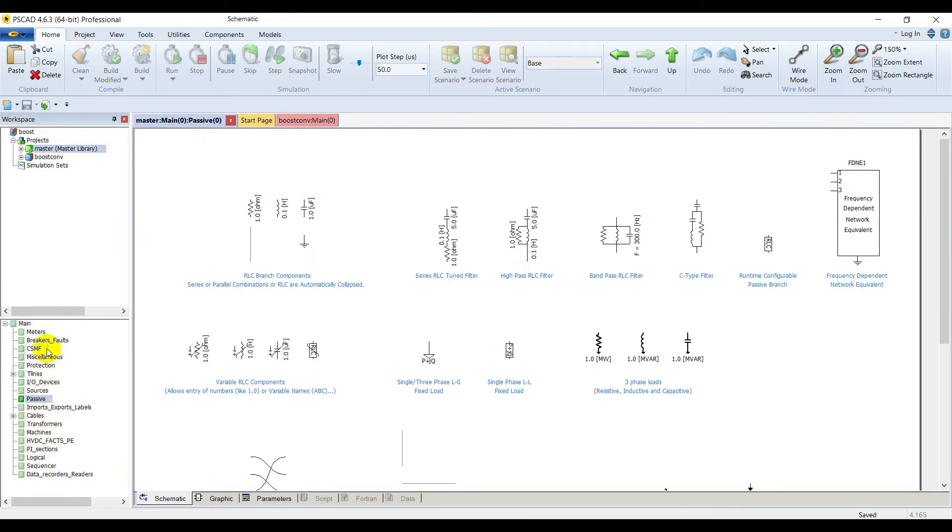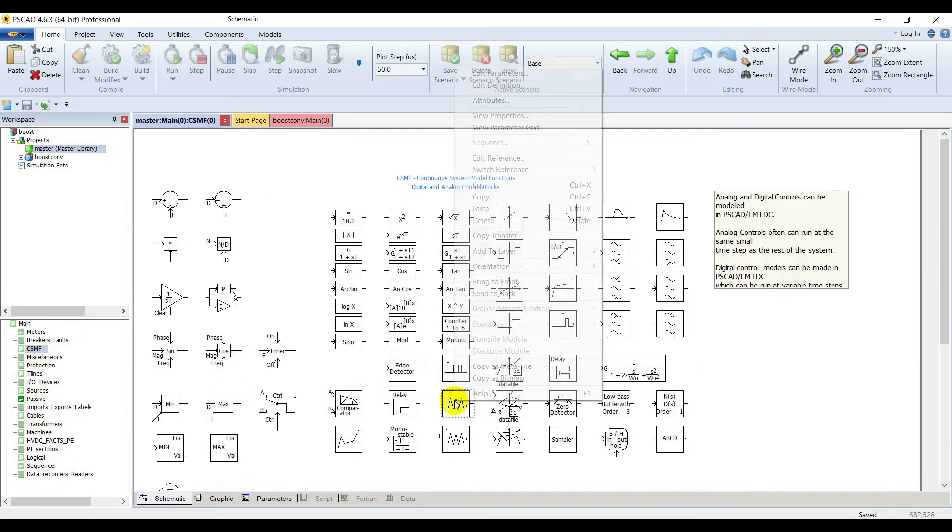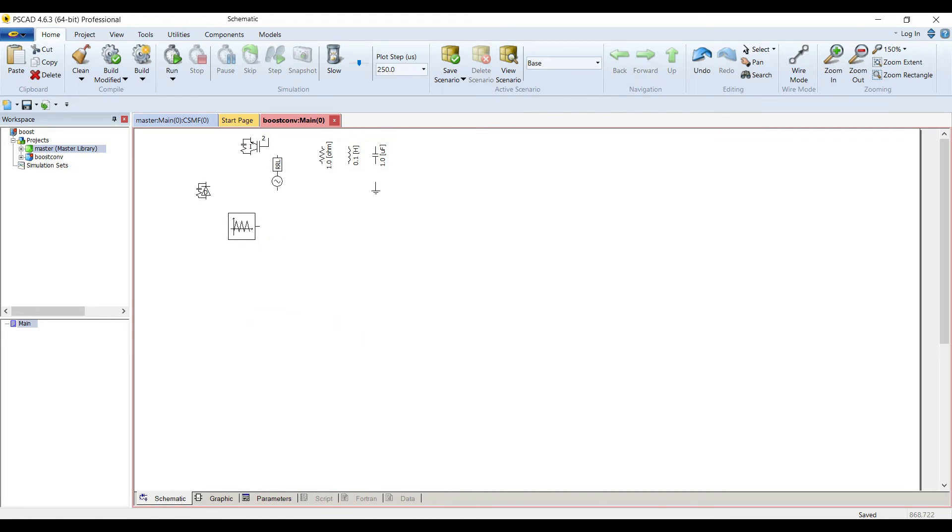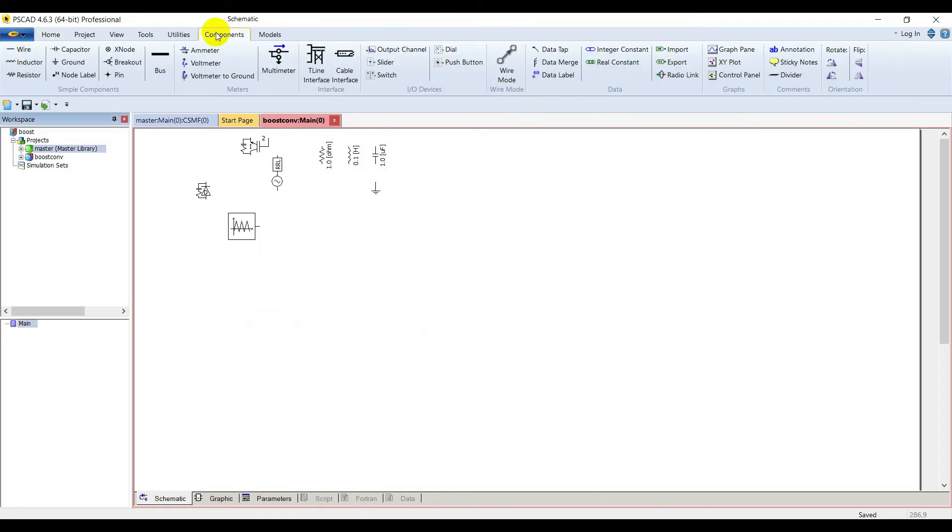Go to common signals and functions and select this function generator. We need some current and voltage meters. Go to components and select a meter for inductor voltage current, for load current, for input voltage and for output voltage. We got everything here and now let's arrange everything.